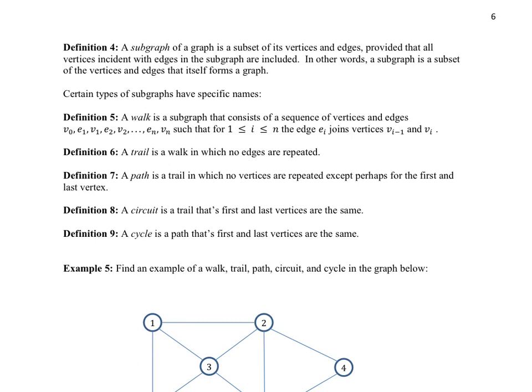So we start out by talking about a subgraph. If you take all of the vertices in a graph and you make a subset of those vertices, you can build a graph with those subset of vertices. And as long as you build a proper graph, meaning that all of the edges end at vertices, you get what we call a subgraph.